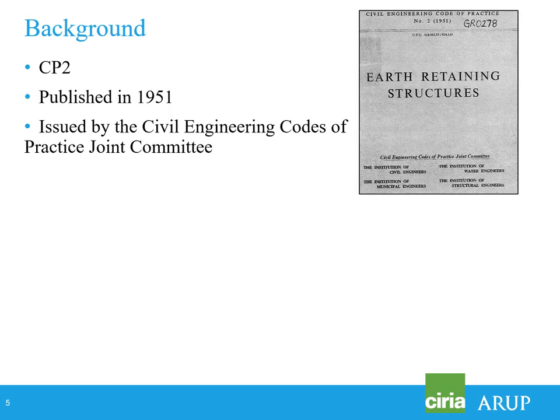Going back a little bit further than 2003, the first code of practice for designing retaining walls in the UK was CP2 — Code of Practice 2 — published in 1951, issued by the Joint Engineering Codes of Practice Joint Committee. Because of the technology at the time, it didn't really cover embedded walls, only briefly touched on sheet pile walls, and was mainly aimed at gravity retaining walls.